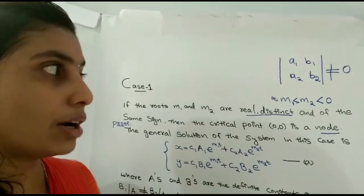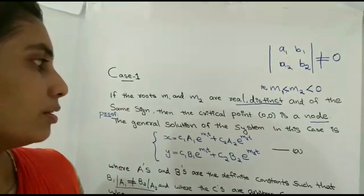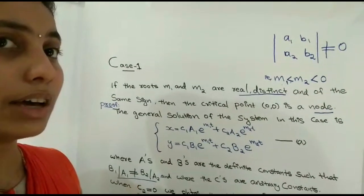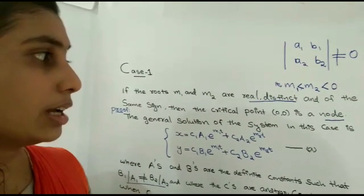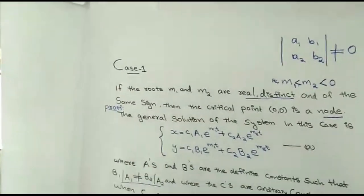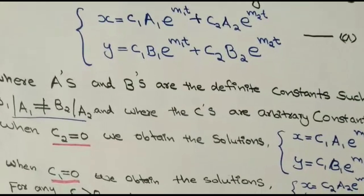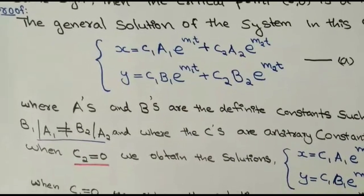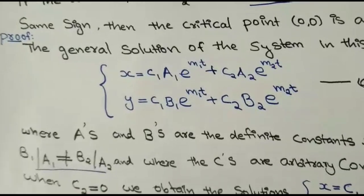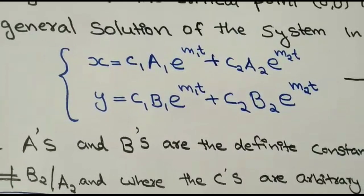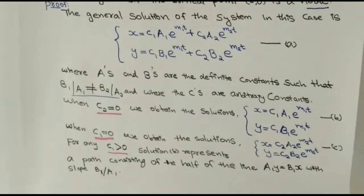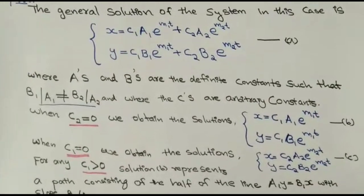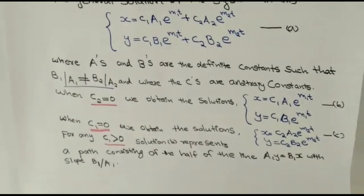With m1, m2 < 0, the general solution of the system dx/dt = a1x + b1y, dy/dt = a2x + b2y is: x = c1a1e^(m1t) + c2a2e^(m2t), y = c1b1e^(m1t) + c2b2e^(m2t), where a's and b's are definite constants with b1/a1 ≠ b2/a2, and c's are arbitrary constants.